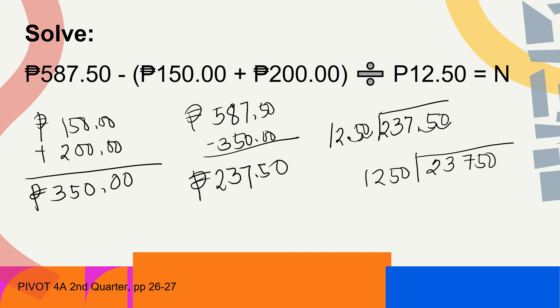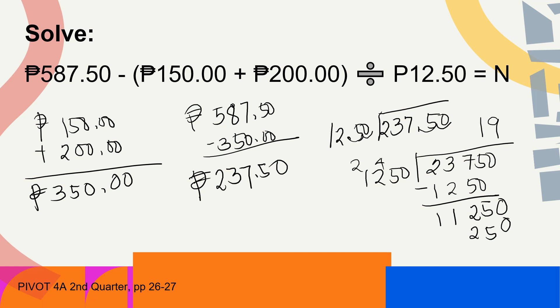2,375 divided by 1,250 equals 1; 1 times 1,250 equals 1,250. Subtract: bring down 0 to get 11,250. 11,250 divided by 1,250 equals 9; 9 times 1,250 equals 11,250; 11,250 minus 11,250 equals 0. The answer is 19 days — that is how many more days Rico needs to save.